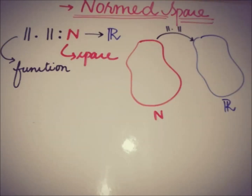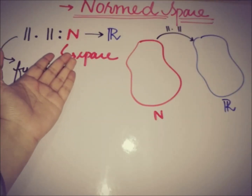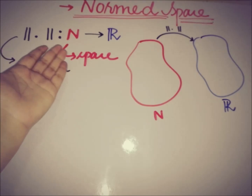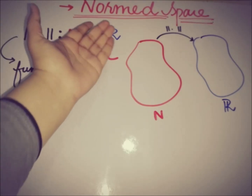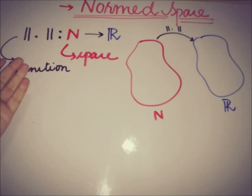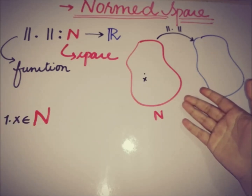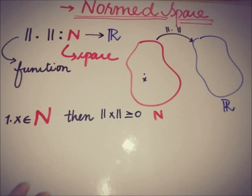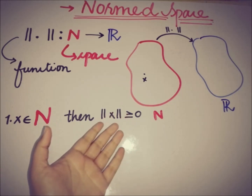We have N as a linear space over any field F, which may be real numbers or complex numbers. A norm on N is a function from N to R, and if this is a norm function then it must satisfy the following axioms. The very first axiom is: if we take any element x from the space N, the norm of x must be positive or at least 0 — it cannot be negative.